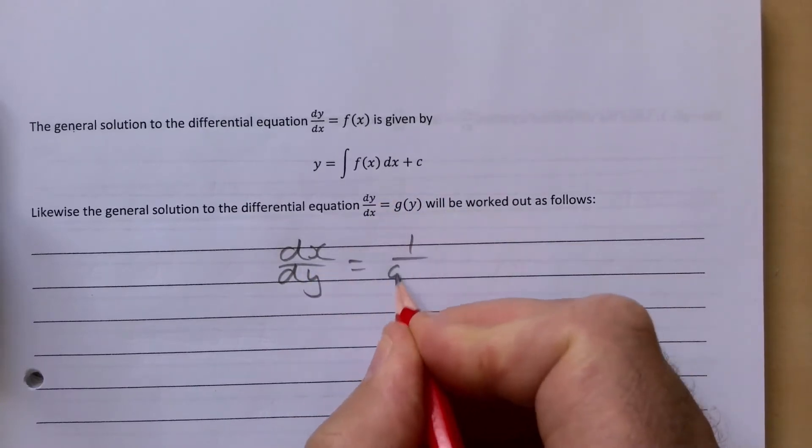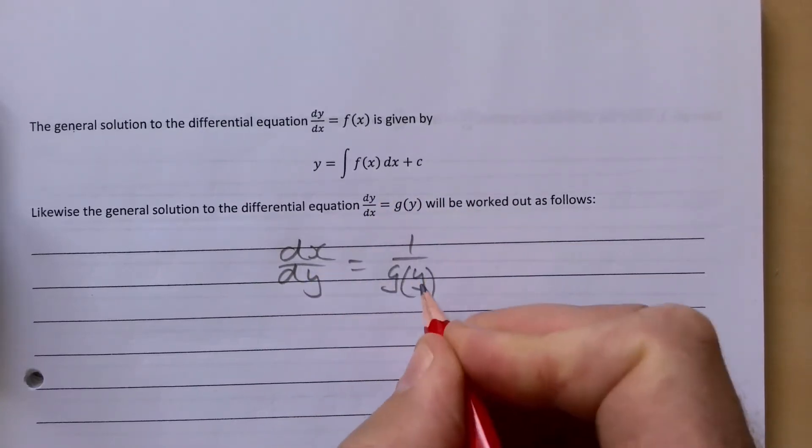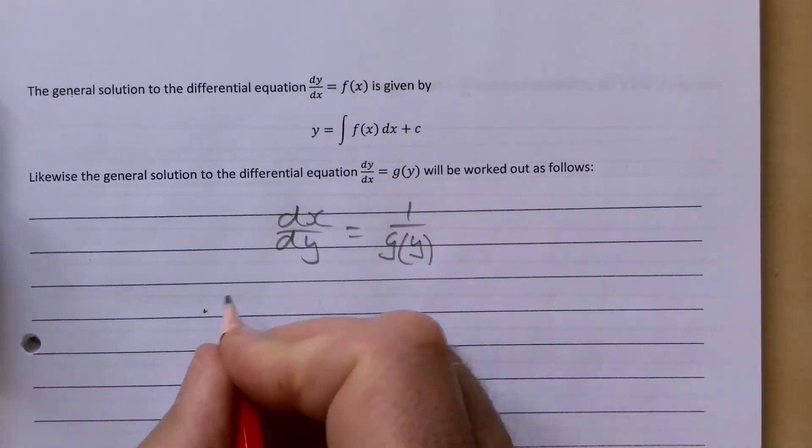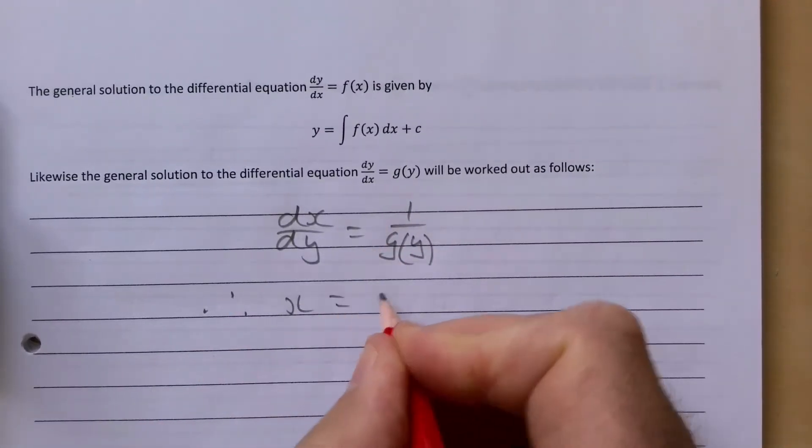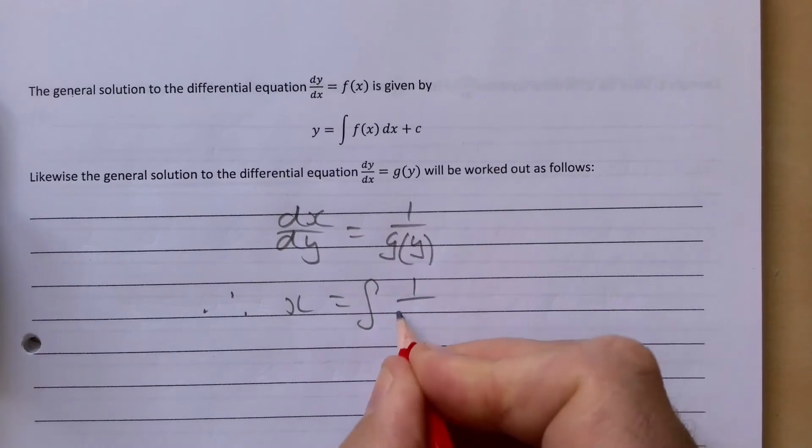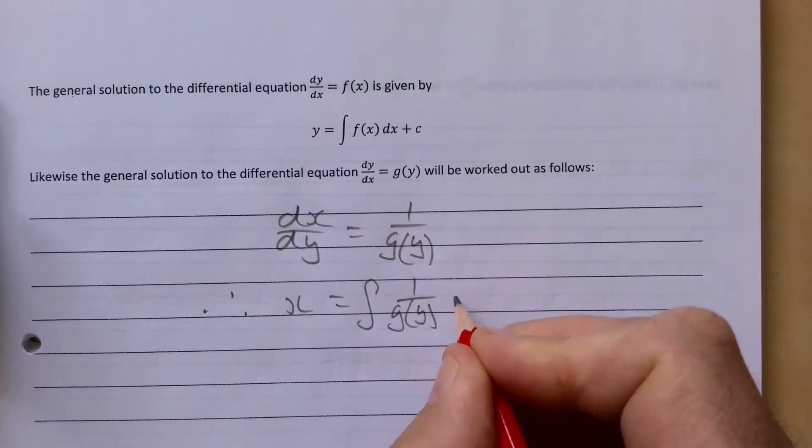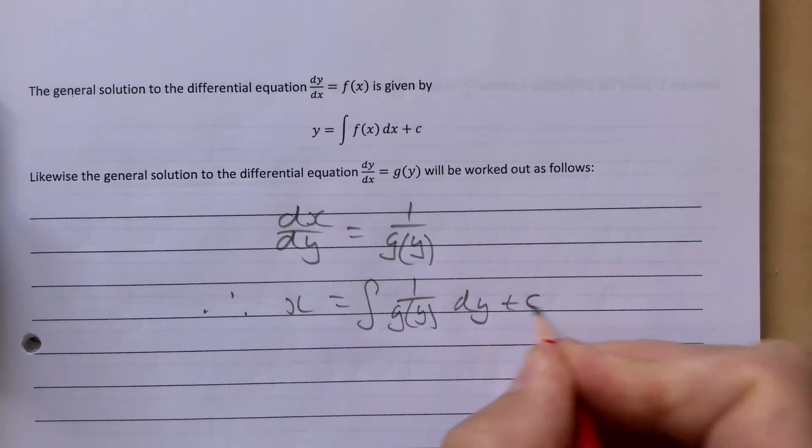is 1 over g(y). Therefore, x is the integral of 1 over g(y) dy plus c.